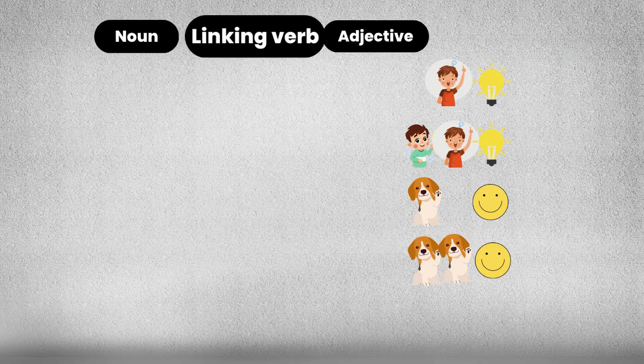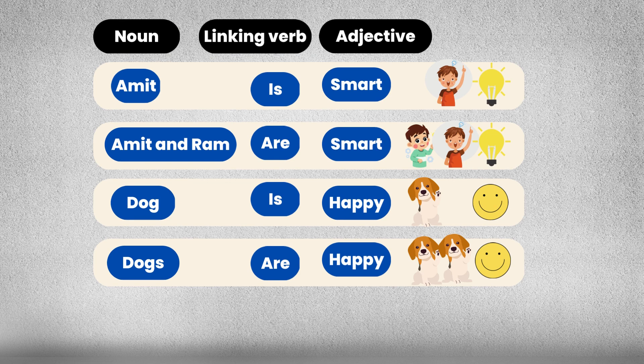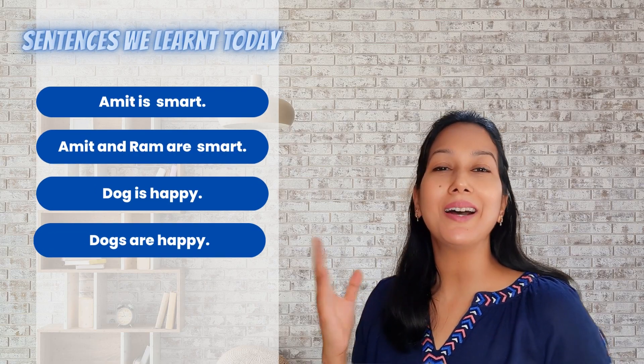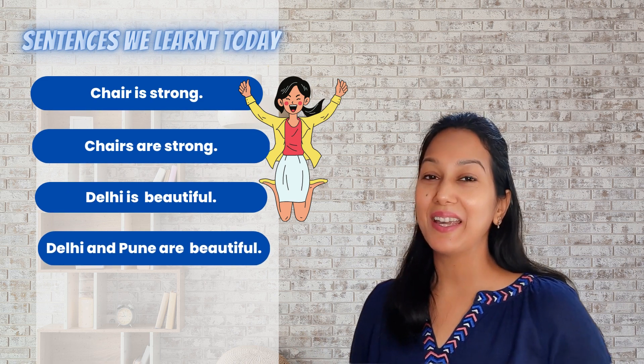Amit is smart. Amit and Ram are smart. Delhi is beautiful. Delhi and Pune are beautiful. We have our basic simple sentences. Easy, wasn't it? Now I'll take you to the next step — that is to form a question out of these very same sentences.